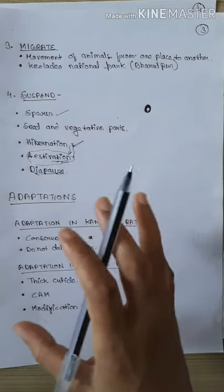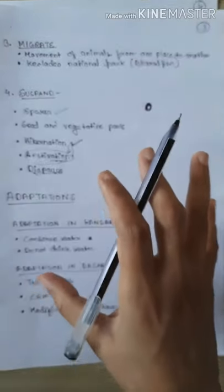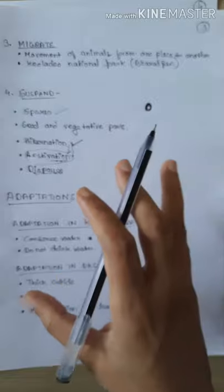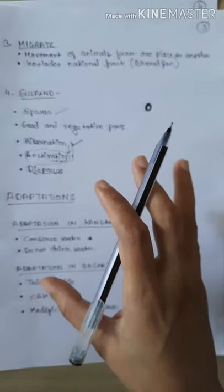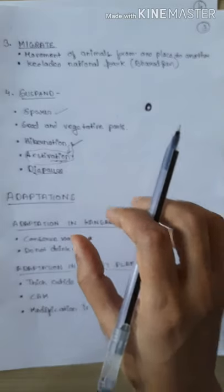So these four points — regulate, conform, migrate, and suspend — are related to the responses of organisms to abiotic factor changes and adverse conditions, so as to adjust themselves. That's all for this video. In the next video, I will teach you about adaptation and some aspects of population also. Along with this video, I am providing you the notes which you have to write down. Till then, stay home, stay safe, use mask, and don't forget to sanitize yourself. Have a nice day.